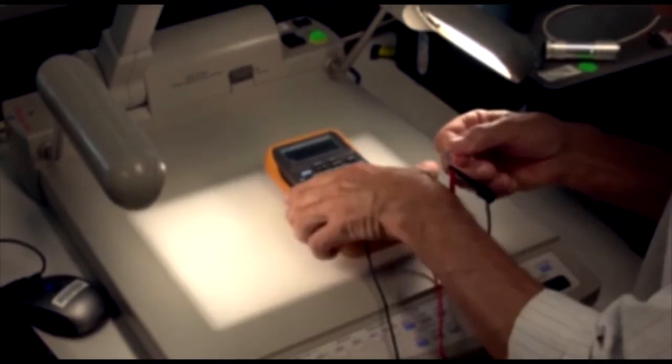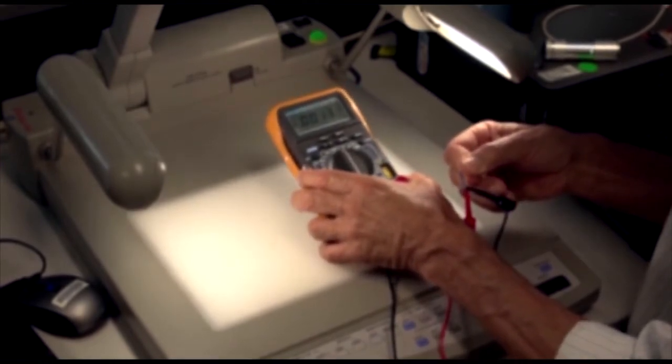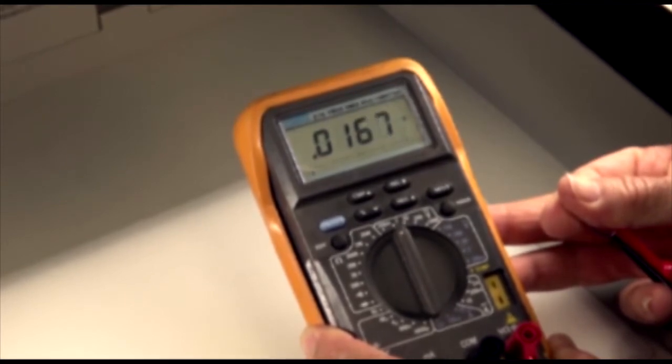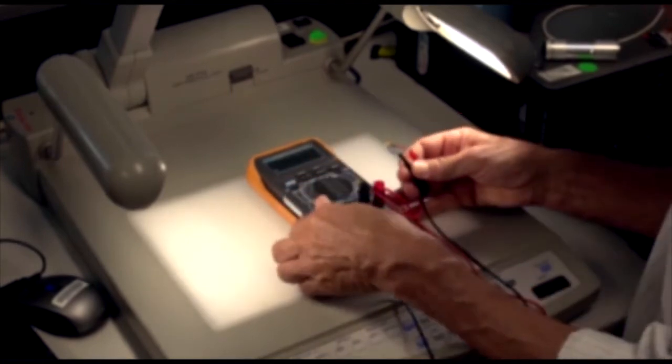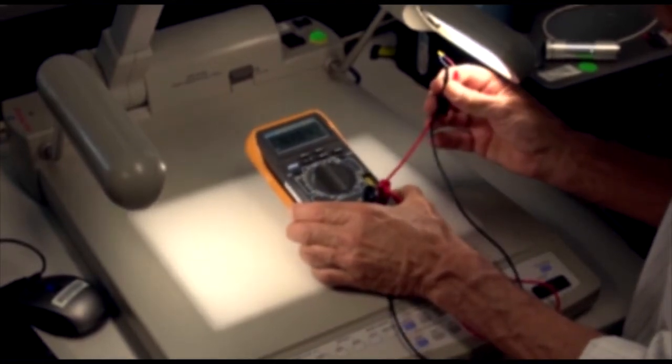When there's no light, we can see the reading of the meter is quite small, quite low. Now I'll put the LED under the light, and depending upon our orientation with respect to the light, we can see our volts begin to rise.